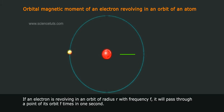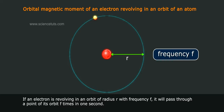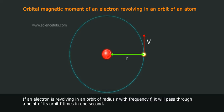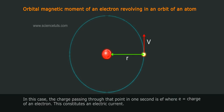in an orbit of radius R with frequency F, it will pass through a point of its orbit F times in one second. In this case, the charge passing through that point in one second is EF, where E equals